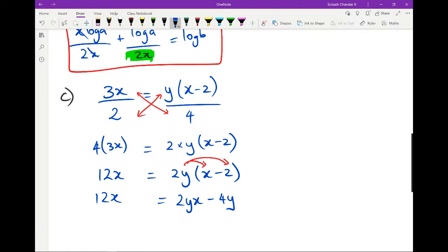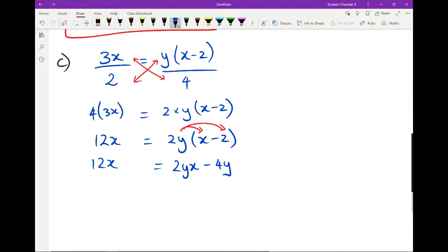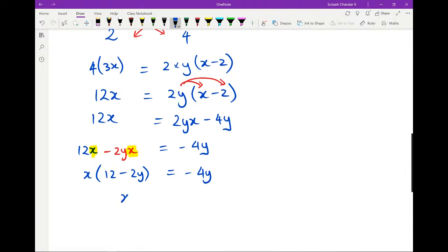So I'm going to expand the brackets, which means I'm getting 2yx minus 4y. And just like before, we always try and bring x's together because that's what we're trying to make the subject. So we're going to rewrite this as 12x minus 2yx equals negative 4y. And once again, we can see that x is a common factor. So take out x as a common factor. And what you have is 12 minus 2y equals negative 4y. And then x is equal to negative 4y divided by 12 minus 2y.